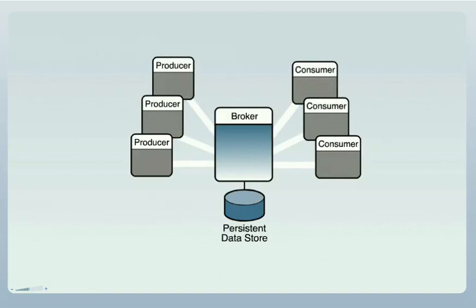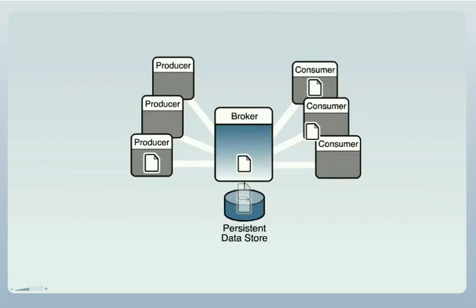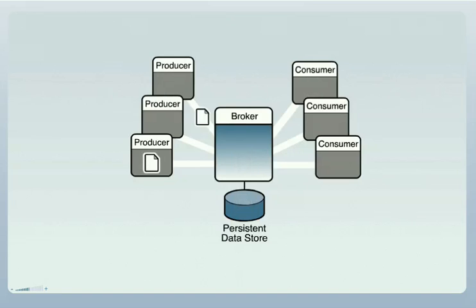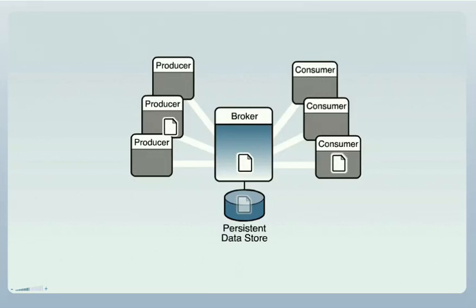A Message Service supports the exchange of messages between many applications. Depending on your needs, a broker might support hundreds or thousands of producers and consumers. When a Message Service is functioning normally, the broker is routing and delivering messages from many producers to many consumers. Some messages are delivered to only one consumer, others might be broadcast to many consumers, depending on the needs of the applications using the Message Queue service.